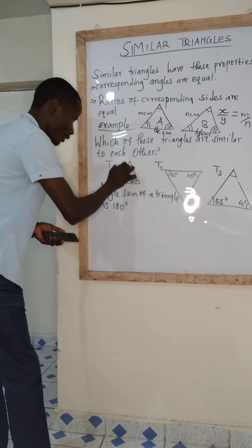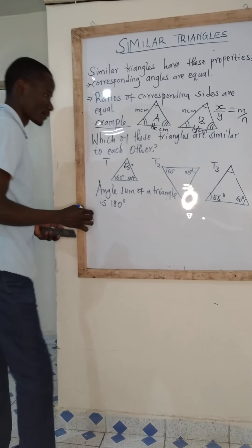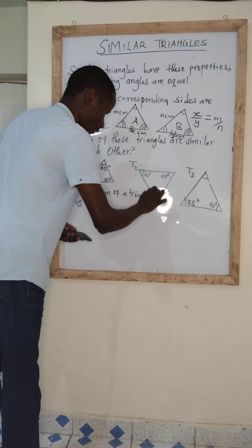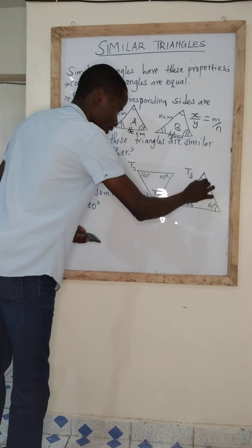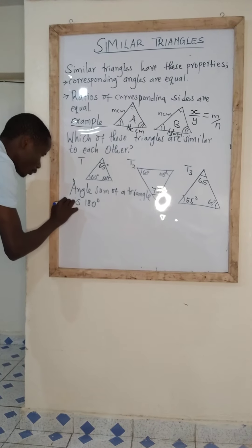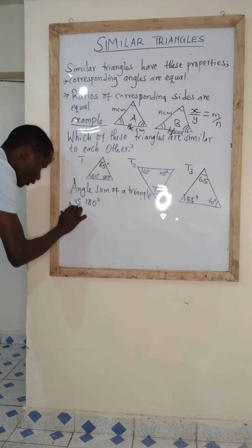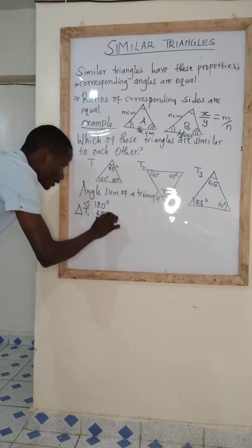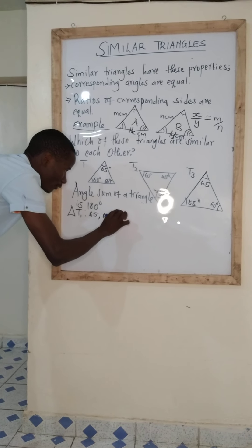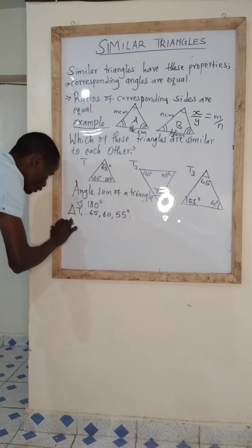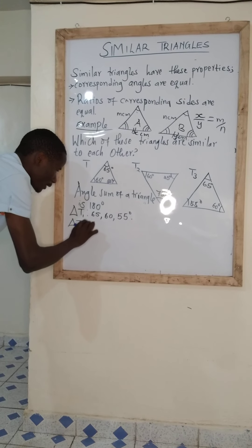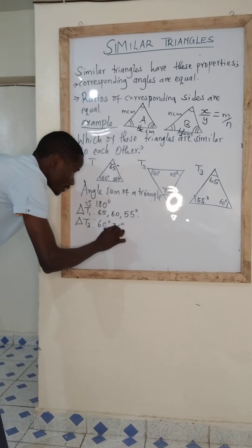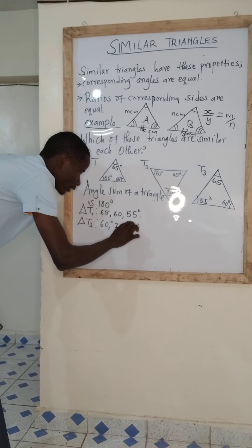The missing angle for T1 is 65 degrees. The missing angle for T2 is 75 degrees, and the missing angle for T3 is 65 degrees. So for triangle T1, the angles are 65, 60, and 55 degrees. Triangle T2, the angles are 60, 75, and 45 degrees.